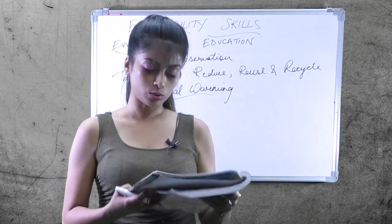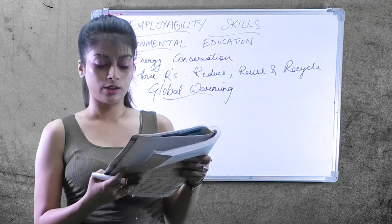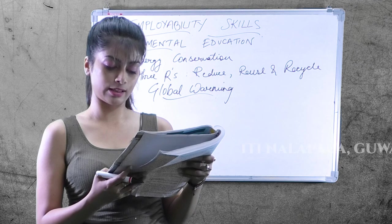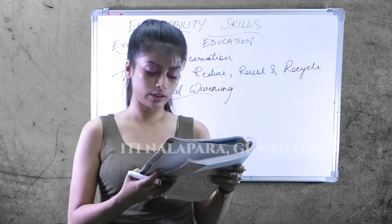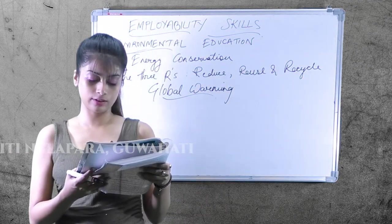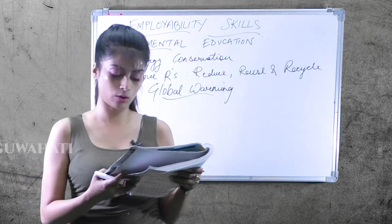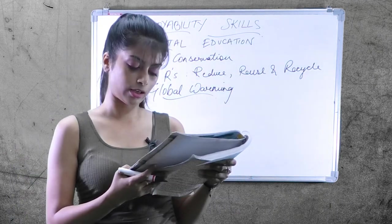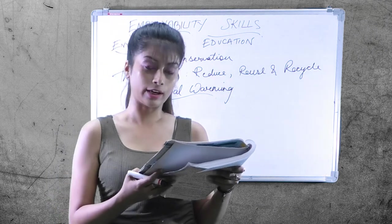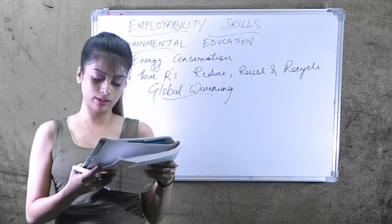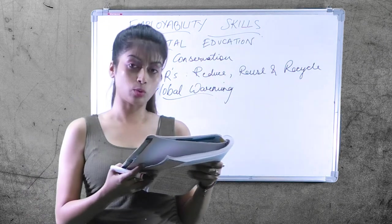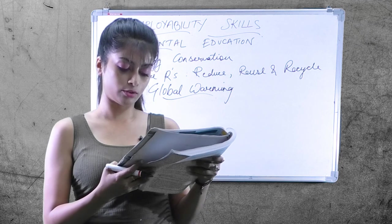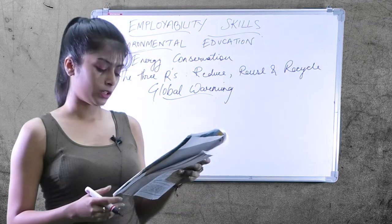Since ozone filters out harmful UV radiation, less ozone means higher UV radiation levels at the surface. The more the depletion, the larger the increase in incoming UV rays. UV rays can cause skin cancer, cataracts, damage to materials like plastic, and harm to certain crops and marine organisms. Although some UV rays reach the surface even without ozone depletion, its harmful effects will increase as a result of ozone layer depletion.